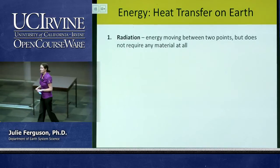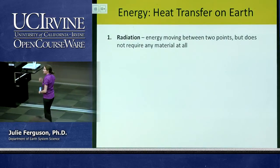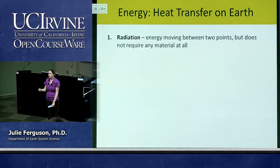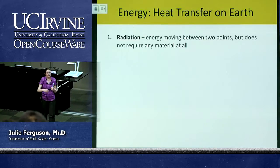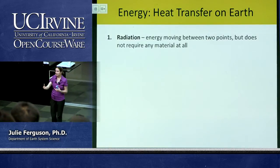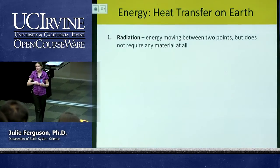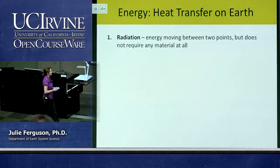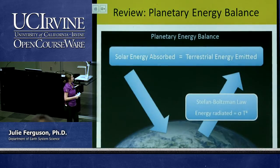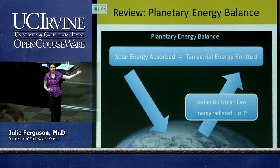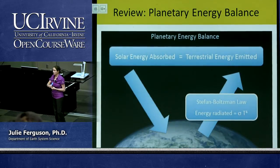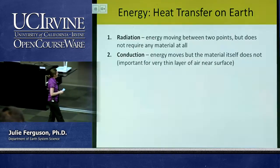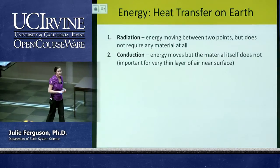So let's think about how we transfer energy. This is a bit of a review since we've already talked about radiation. Radiation is hugely important for the Earth — it's how energy moves between two points without requiring matter. This is how energy arrives from the sun, traveling through the vacuum of space. It's also how we maintain energy balance, losing energy in the form of radiation out to space.